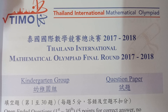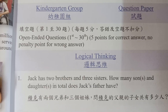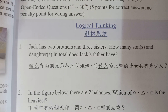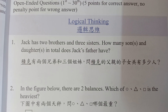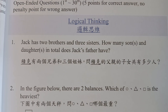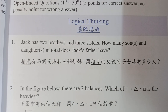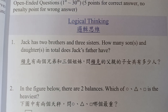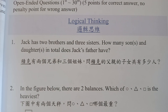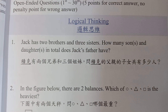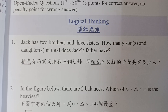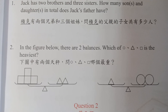This is the final round, test number one for logical thinking part. Jack has two brothers and three sisters. How many sons and daughters in total does Jack's father have? Jack has two brothers plus three sisters, that's five, including Jack, six. So there are six sons and daughters of his father. The answer is six.